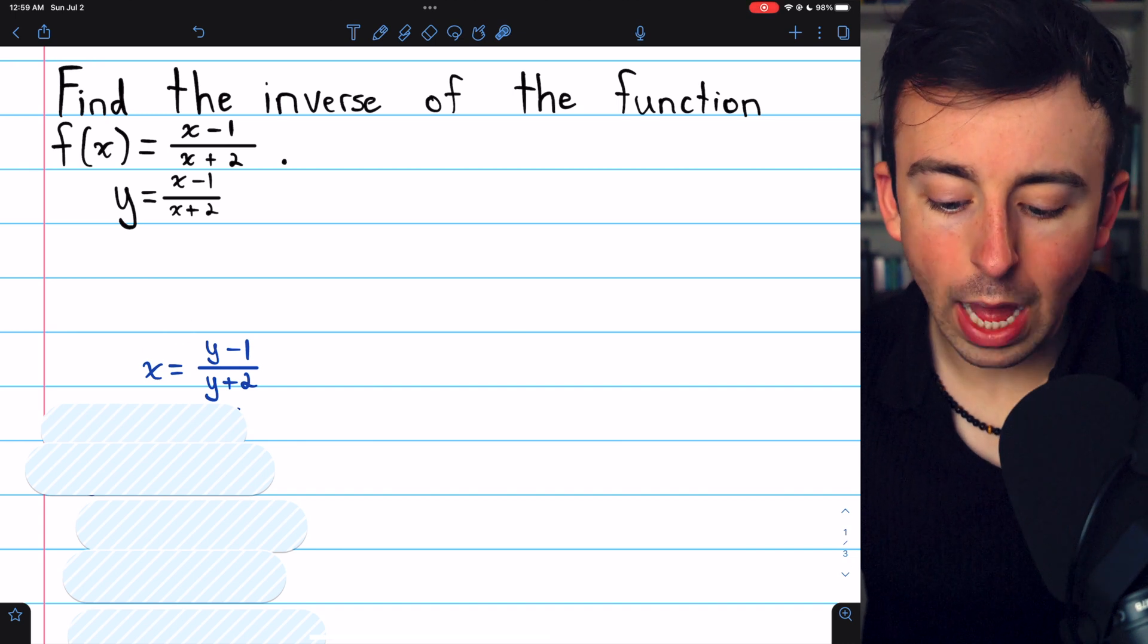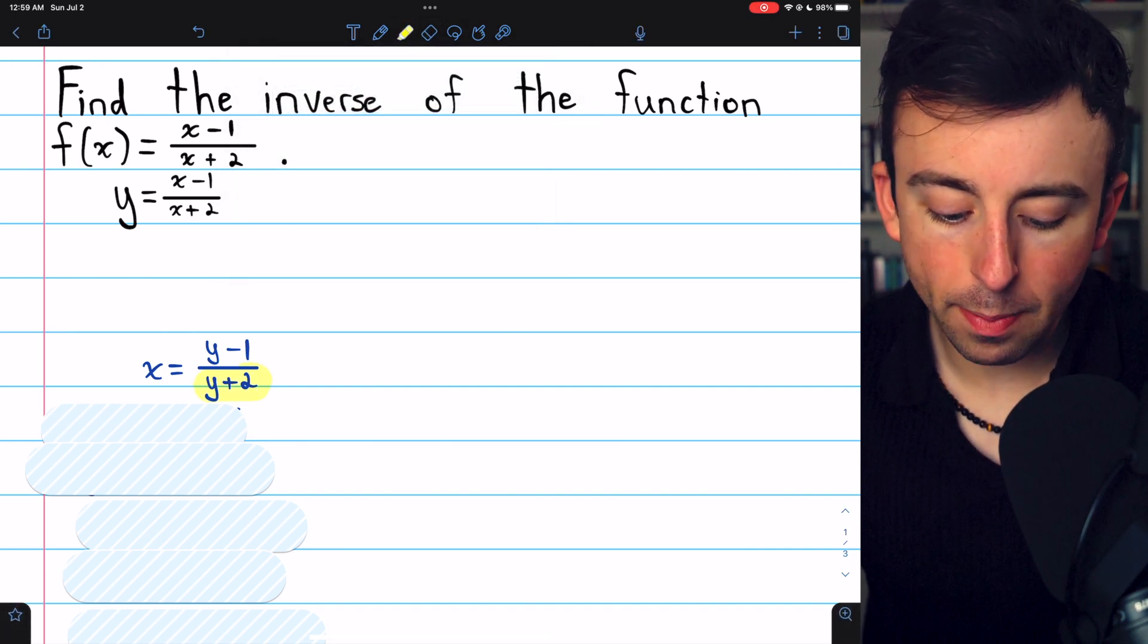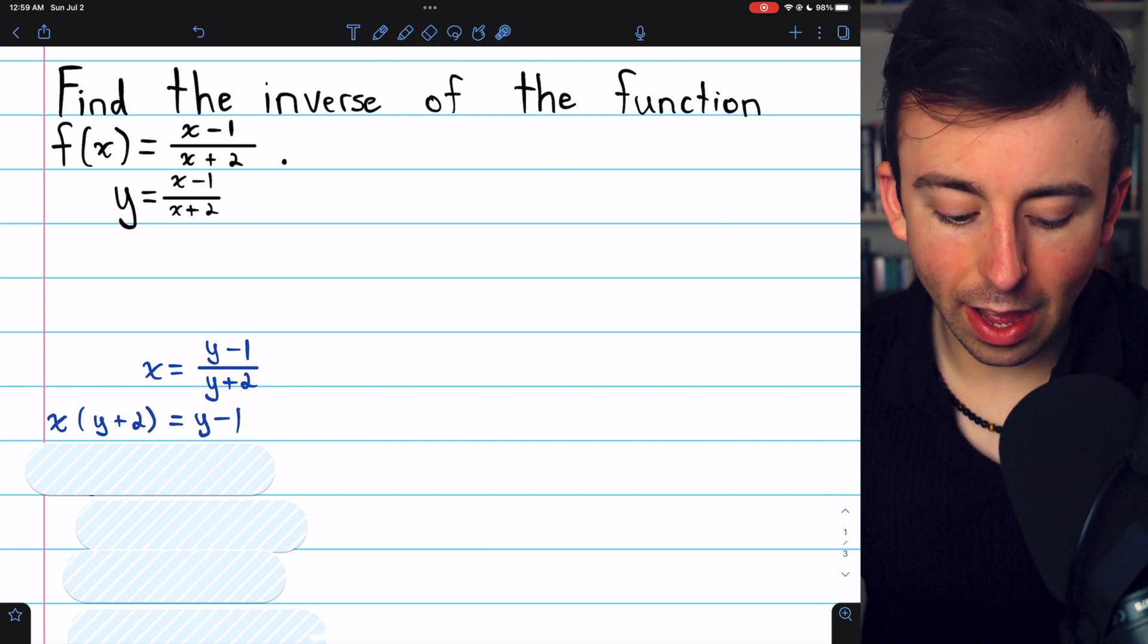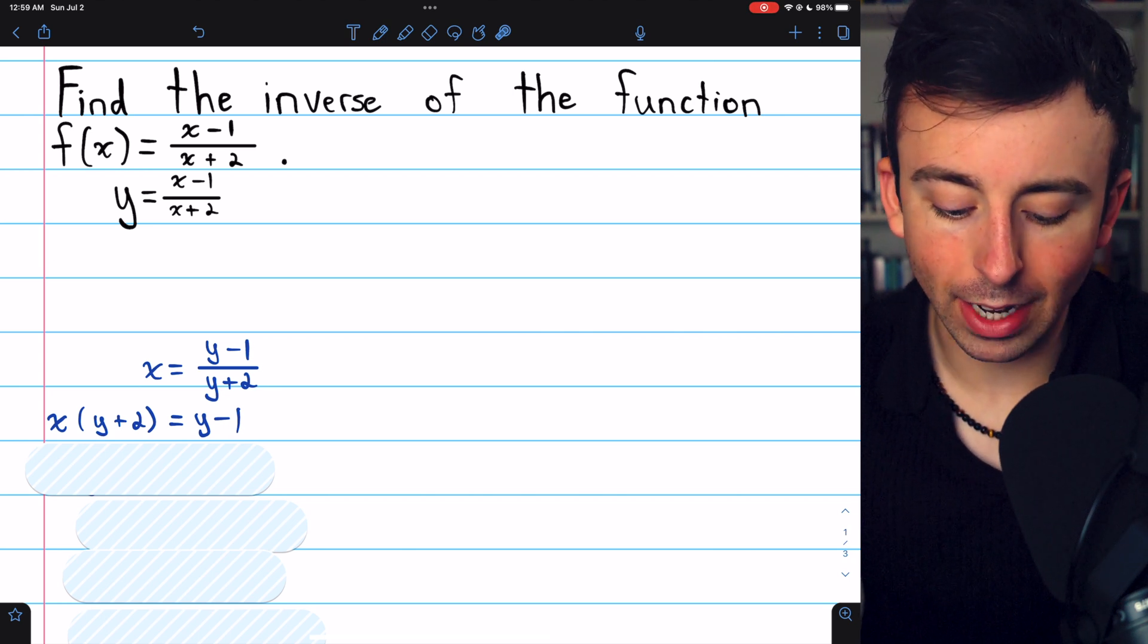To solve this equation for y, let's begin by multiplying both sides by y plus 2 to get rid of that denominator. That gets us here. We have x times y plus 2 equals y minus 1.